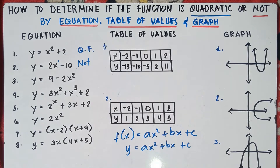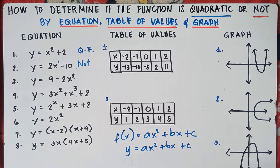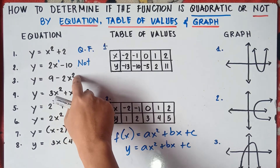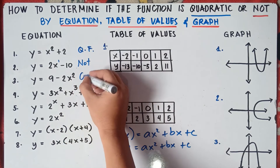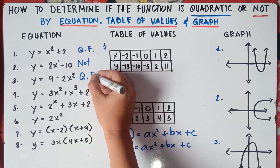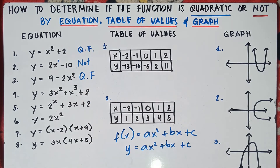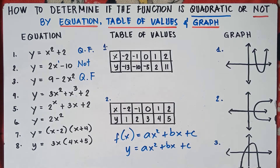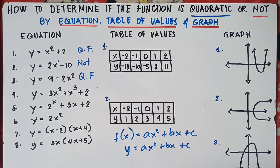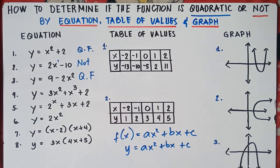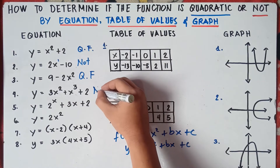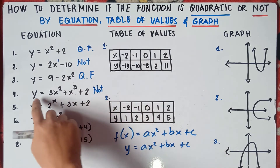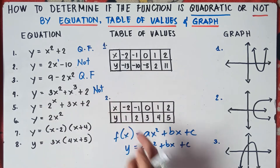For number 3, check the highest exponent — is it 2? Yes, the highest exponent is 2, so therefore this is a quadratic function. For number 4, check the degree. Yes, we have 2, but the highest exponent there is 3. Therefore, this is not a quadratic function — the x exponent is 3.